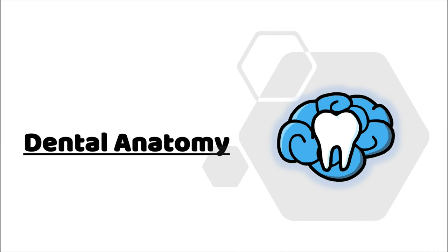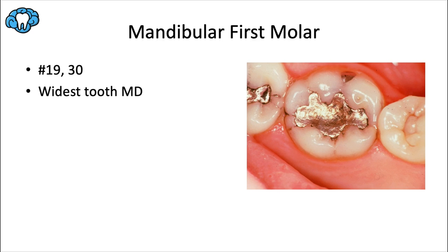Welcome back to our dental anatomy series. This video is about the mandibular first molar. I'm showing you a photo with a restoration in the tooth by design — to help you remember that this is the permanent tooth most likely to get caries, thanks to it erupting at the young age of six years old and having a lot of pits and fissures where caries can originate.